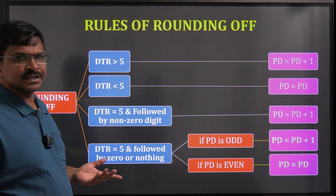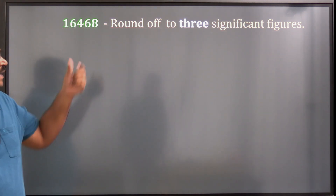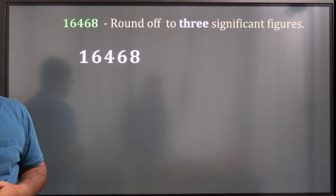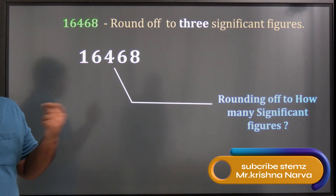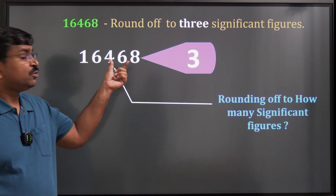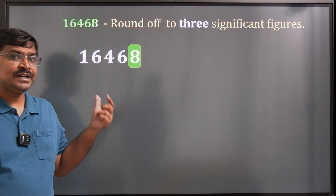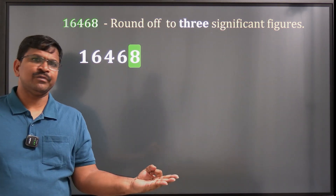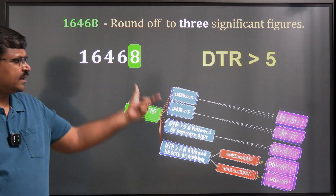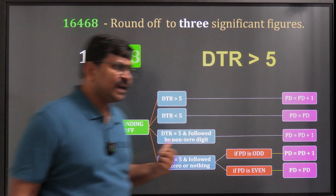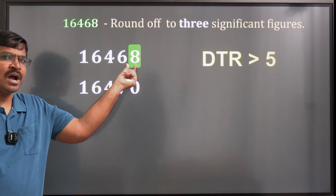Let us solve a numerical example. Suppose the number is 16468 and we want to round it off to three significant figures. It has five significant figures, so we need to remove two digits. First, identify the DTR — here it is 8. Since DTR is greater than 5, PD must be increased by one. The PD here is 6, so 6 becomes 7. In a non-decimal number, the removed digit is replaced with zero.